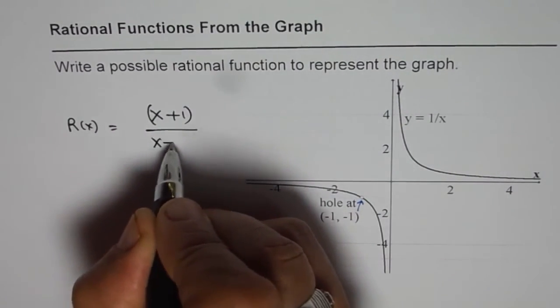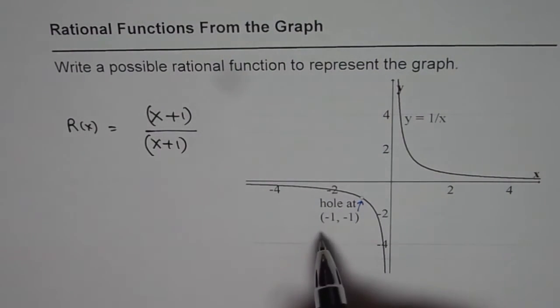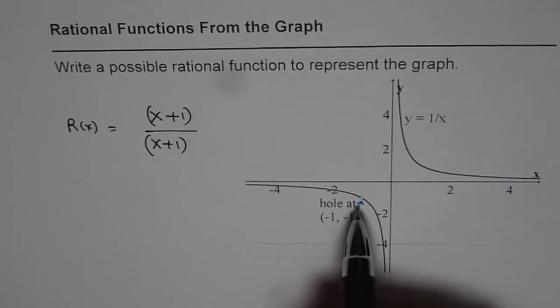So there should be a common factor in numerator and denominator at x = -1 which will result in the hole.